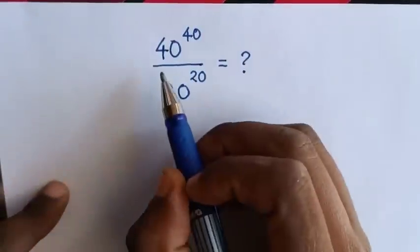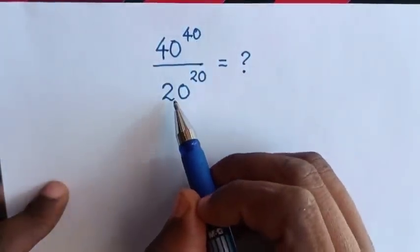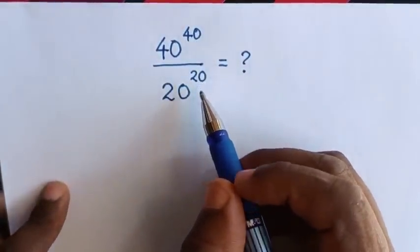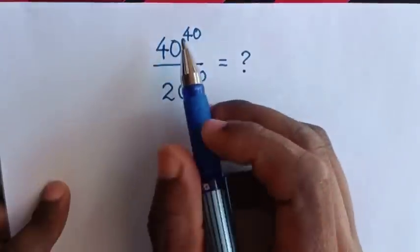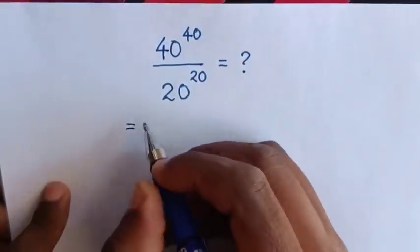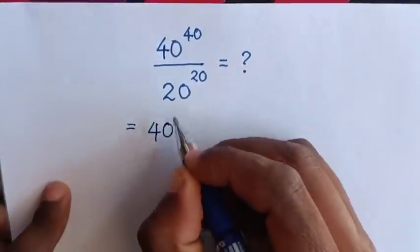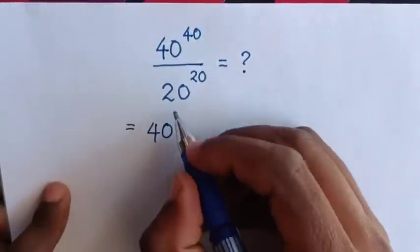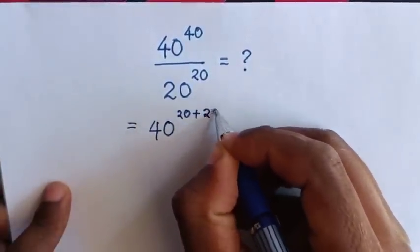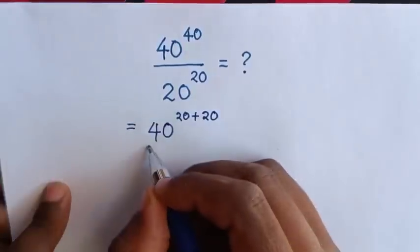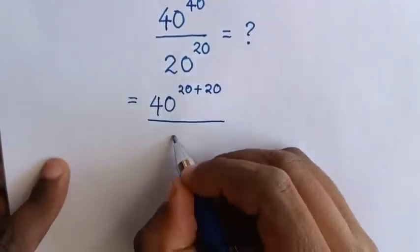Hello. How to solve 40 power 40 over 20 power 20. So first, from here, 40 power 40 — this will be equal to 40 power of 40, which is the same as power of 20 plus 20, over this 20 power of 20.